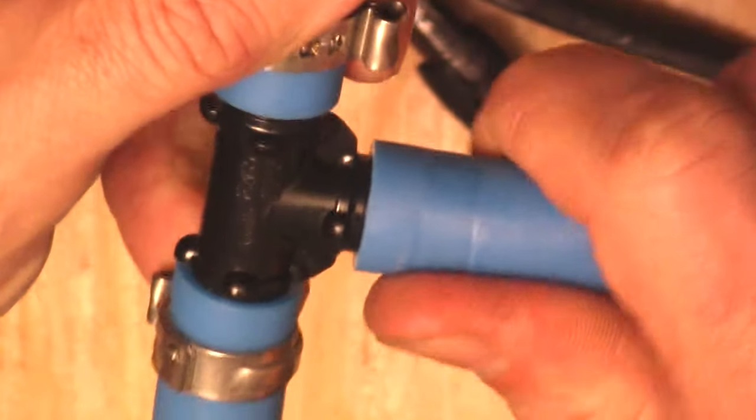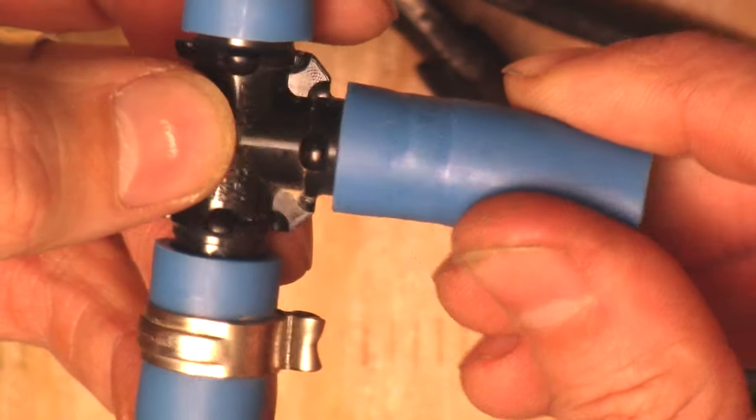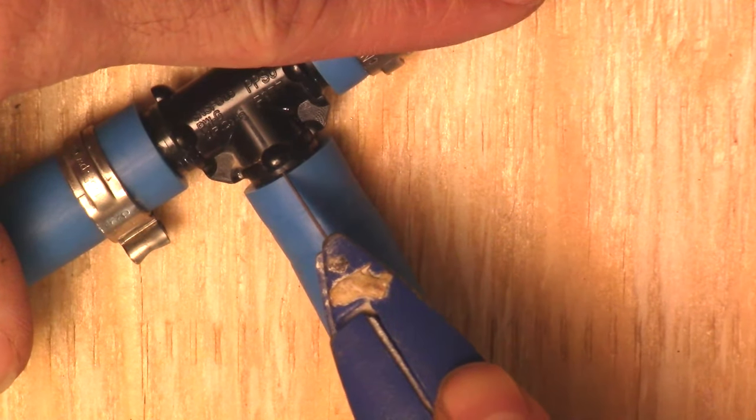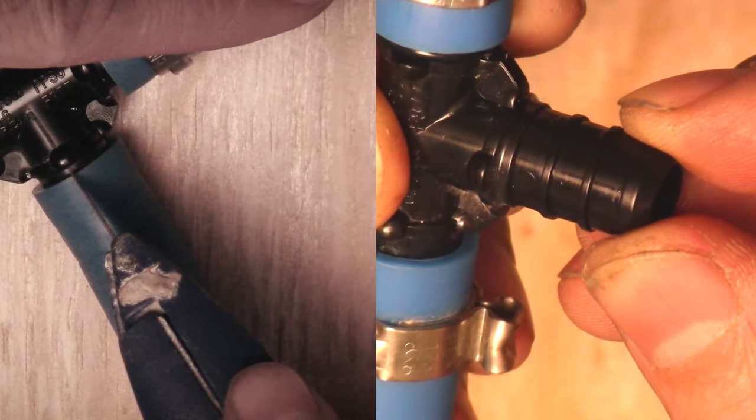The PEX tubing is still stuck on there since it was compressed by the clamp, so I'll have to cut it off. Using a brand new razor blade I'm going to score it, but not too deep because I'm going to check it afterwards to be sure I didn't cut into the actual fitting.